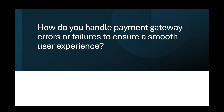For more persistent errors such as gateway downtime or API failures, I set up a failover mechanism that allows the system to switch to an alternate payment gateway if the primary one is unavailable. In cases where the transaction cannot be processed, I make sure the system provides the user with clear options such as retrying the payment later, choosing a different payment method, or contacting customer support. I also set up real-time monitoring to track gateway performance and detect unusual spikes in error rates, with alerts configured to notify the team immediately when an issue arises.